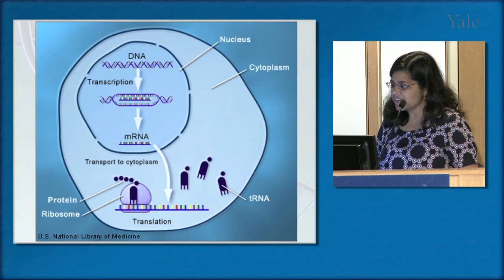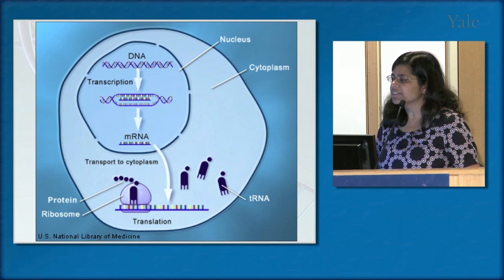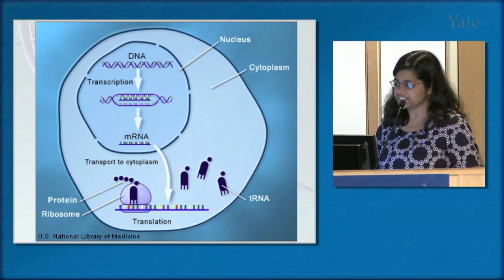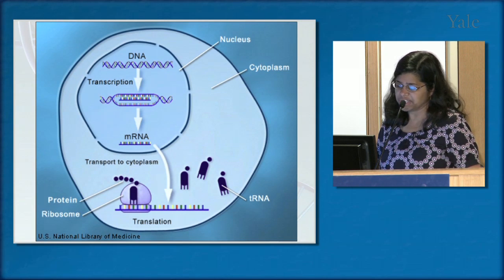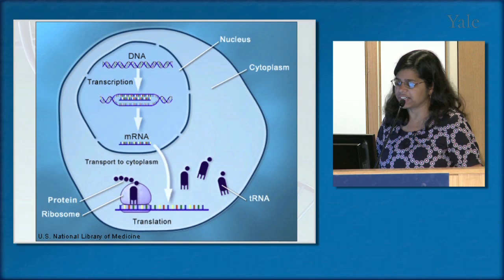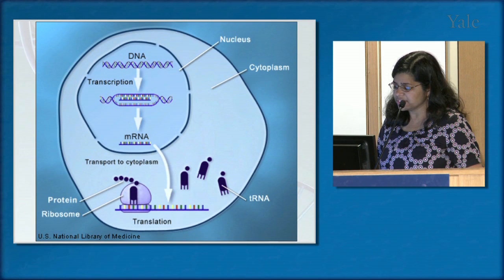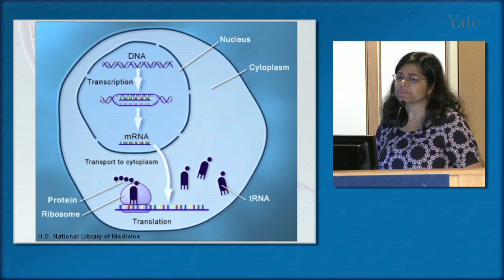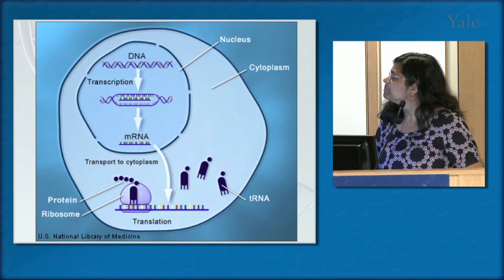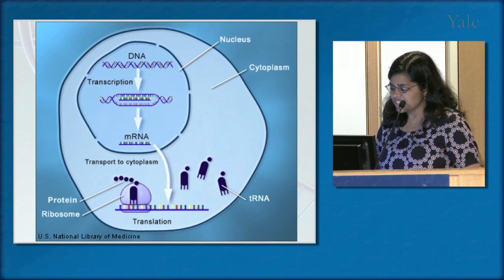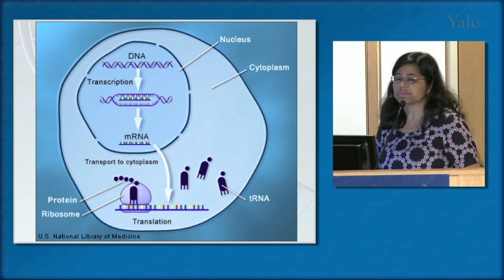DNA is housed in the nucleus of our cells. It undergoes transcription, in which the genetic code is transcribed into molecules called messenger RNA. This is exported out into the cytoplasm, where it hooks up with ribosomes — the protein-making machinery. The sequence of nucleotides specifies the sequence of amino acids that make up the protein chain.